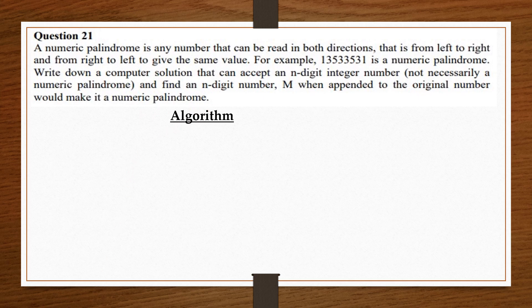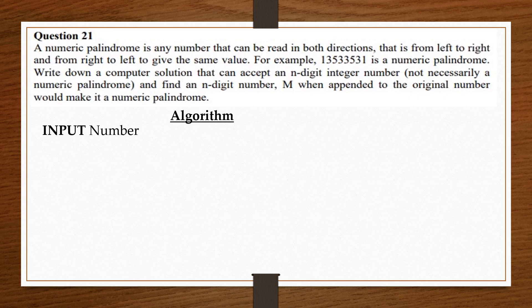For the algorithm, first we ask the user to input a number — so we say: input number. The concept we are going to use is that since a numeric palindrome can be read in both directions and give the same value, we are going to save a copy of the user's number in a different variable — we call it new_number. So we say: new_number equals number.